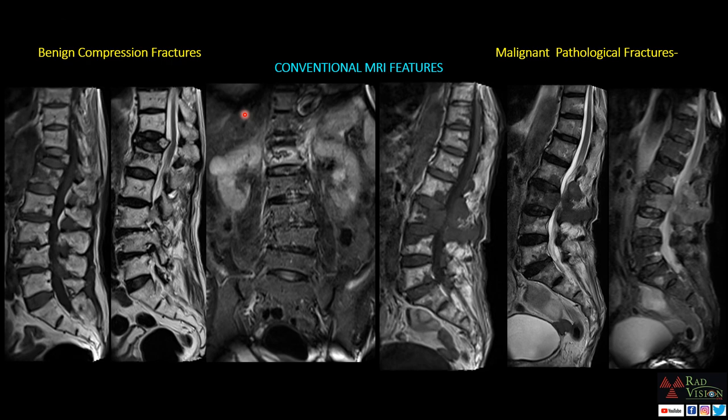We will now differentiate benign compression fractures from malignant pathological fractures. The classical fracture line, fluid sign, and abnormal intervertebral cleft sign are commonly seen in benign or osteoporotic compression fractures. Abnormal posterior convex vertebral margin, involvement of the posterior elements, and infiltration into the thecal sac favor malignant pathological fractures. Retropulsion of the fracture fragment is seen in benign fractures only, not in malignant. Always remember: abnormal posterior convex vertebral margins favor malignant or pathological fractures.